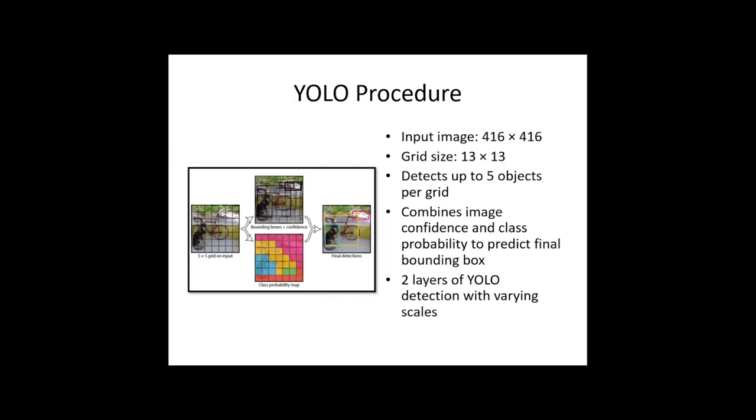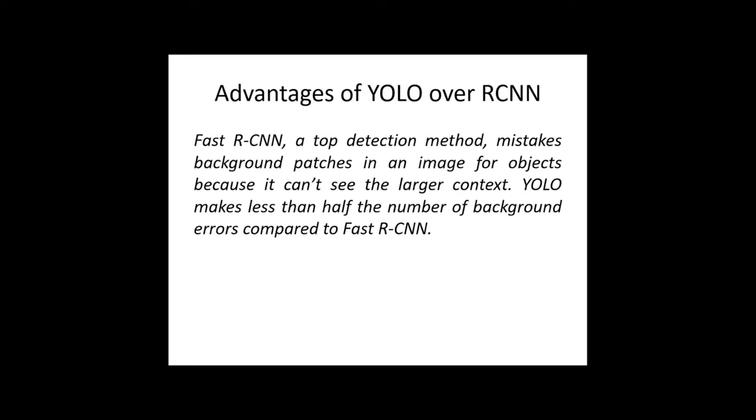Once it has a confident result, it gives the final bounding box of the object. This way, YOLO considers the global context of the image and accurately predicts the size and location of the recyclable waste. We use YOLO algorithm over RCNN or Fast RCNN because YOLO can see the global context and make decisions by considering the entire image at once instead of specific grids, unlike RCNN.